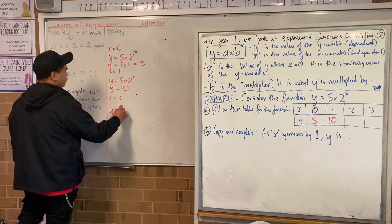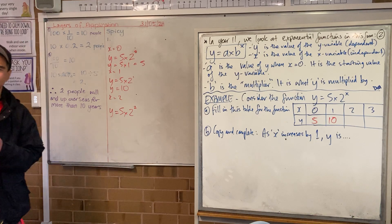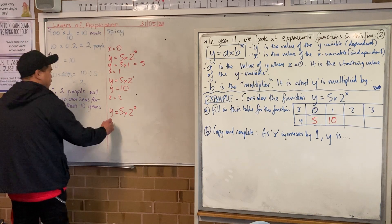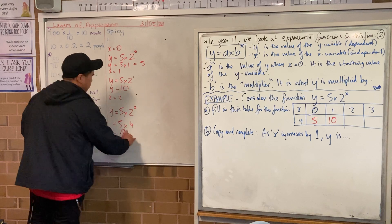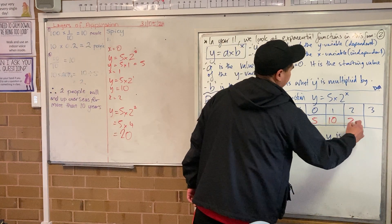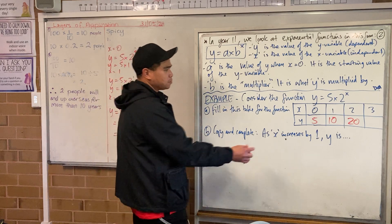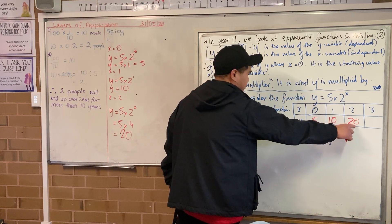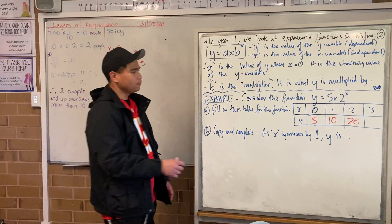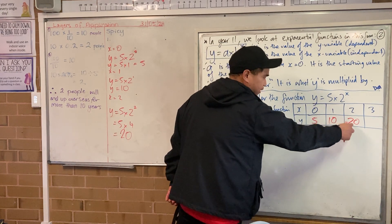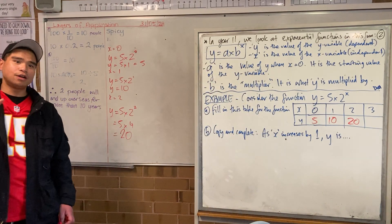x equals 2: y equals 5 times 2 to the power of 2. What is 2 to the power of 2? 2 times 2, so equals 5 times 4. 5 times 4 is 20. So what did I say b was? It's the multiplier — what did I just multiply y by to get this? 2. And 10 times by 2 is 20. If I graph this, is that going to be a straight line? No — it's going to curve up.